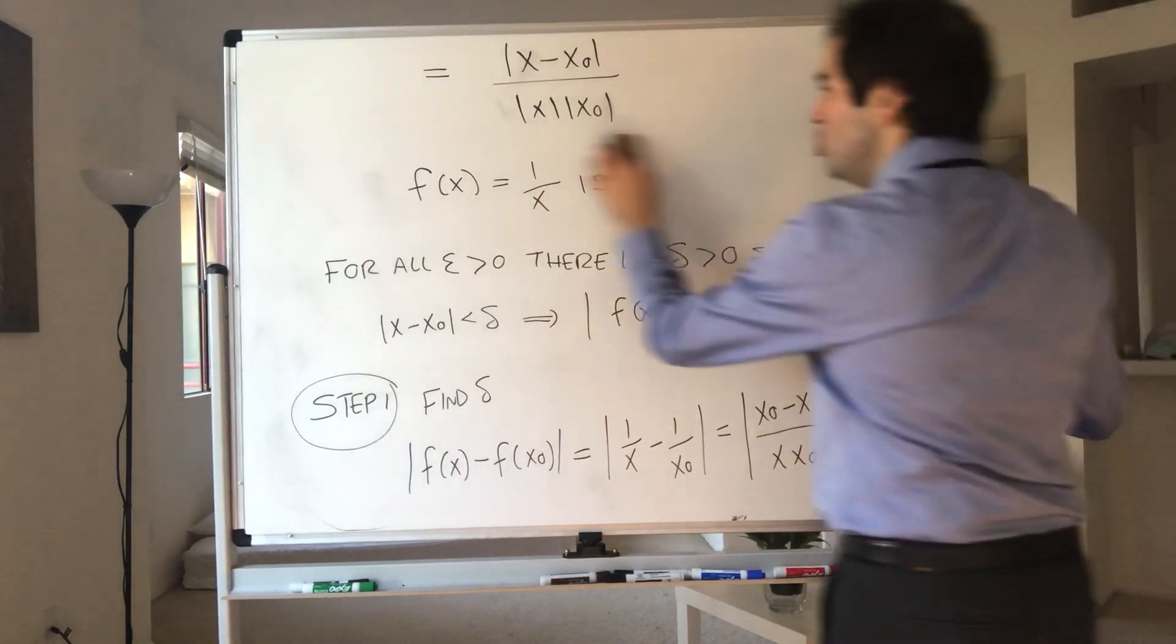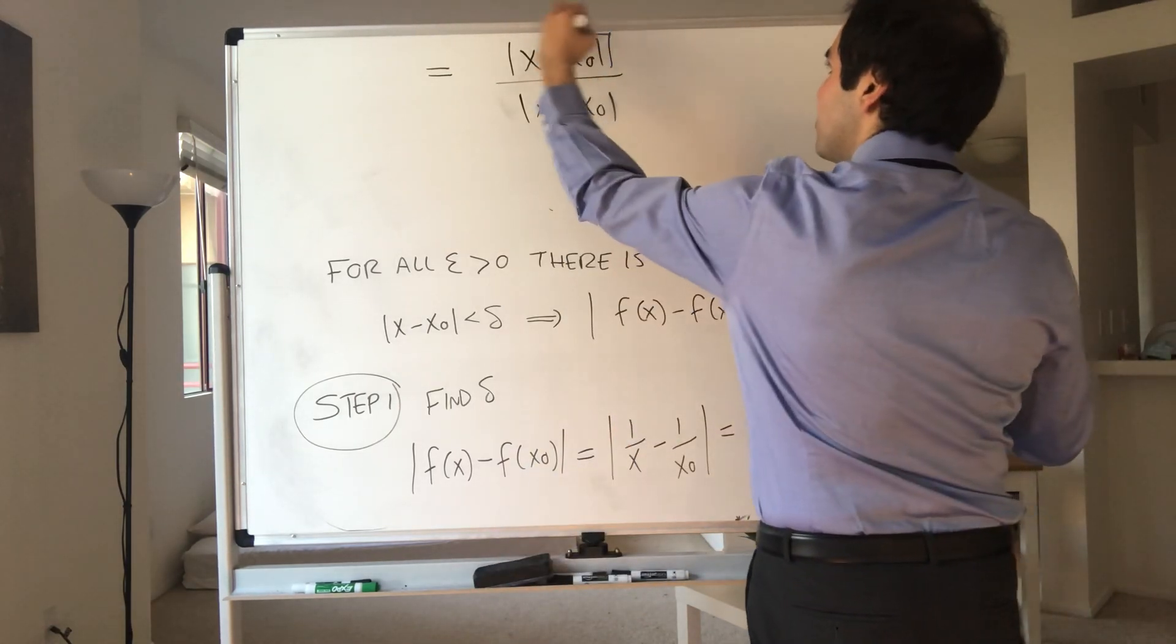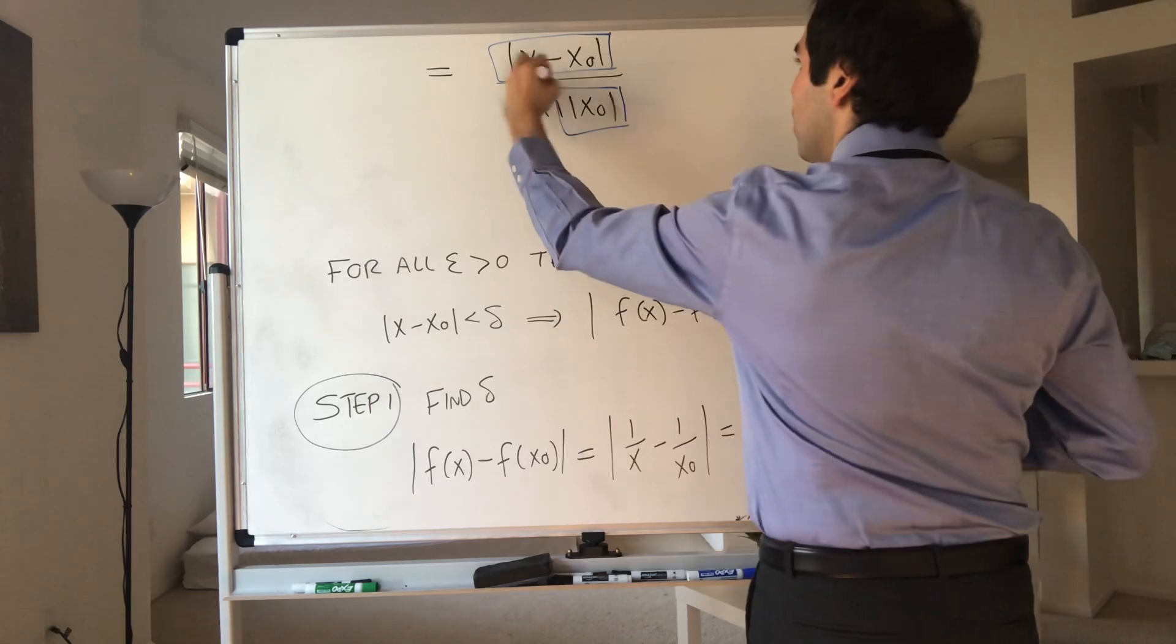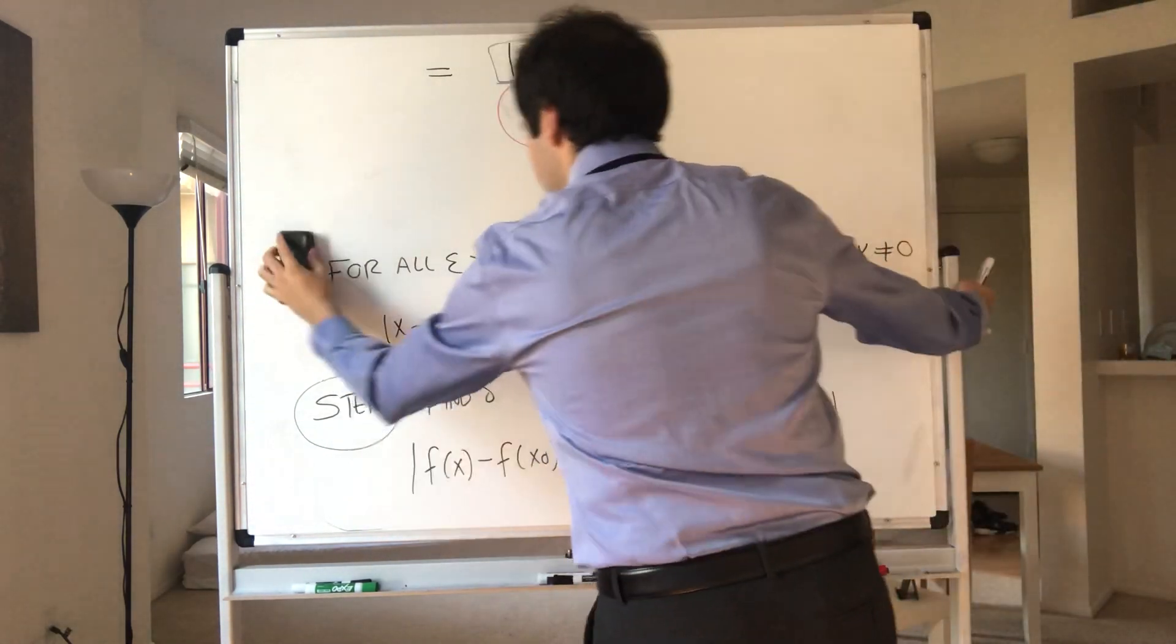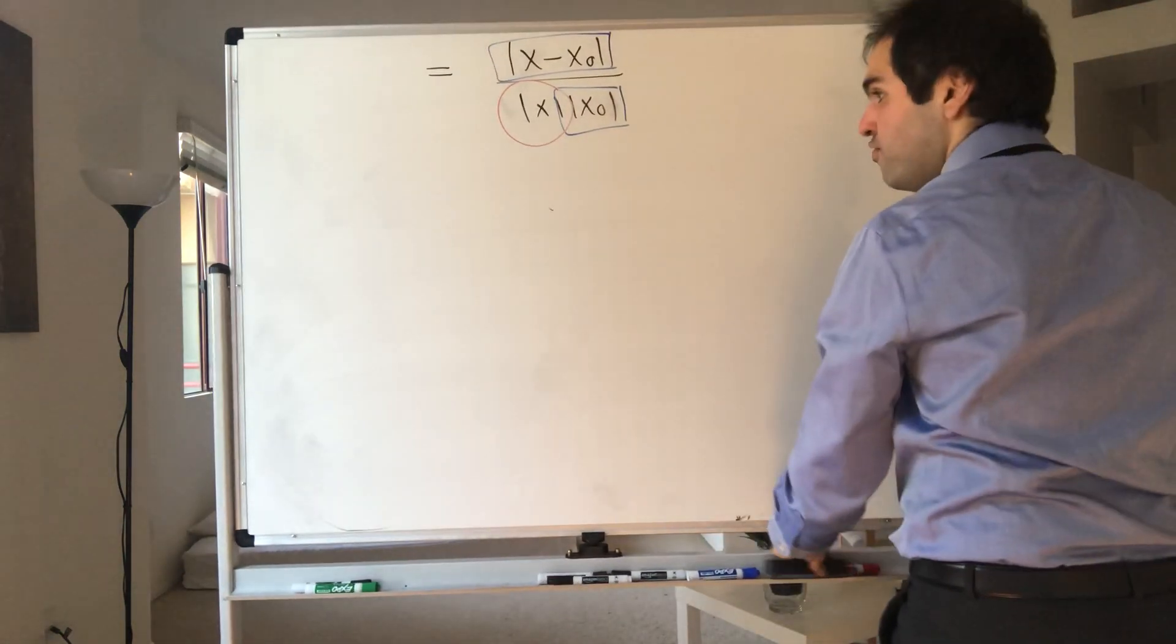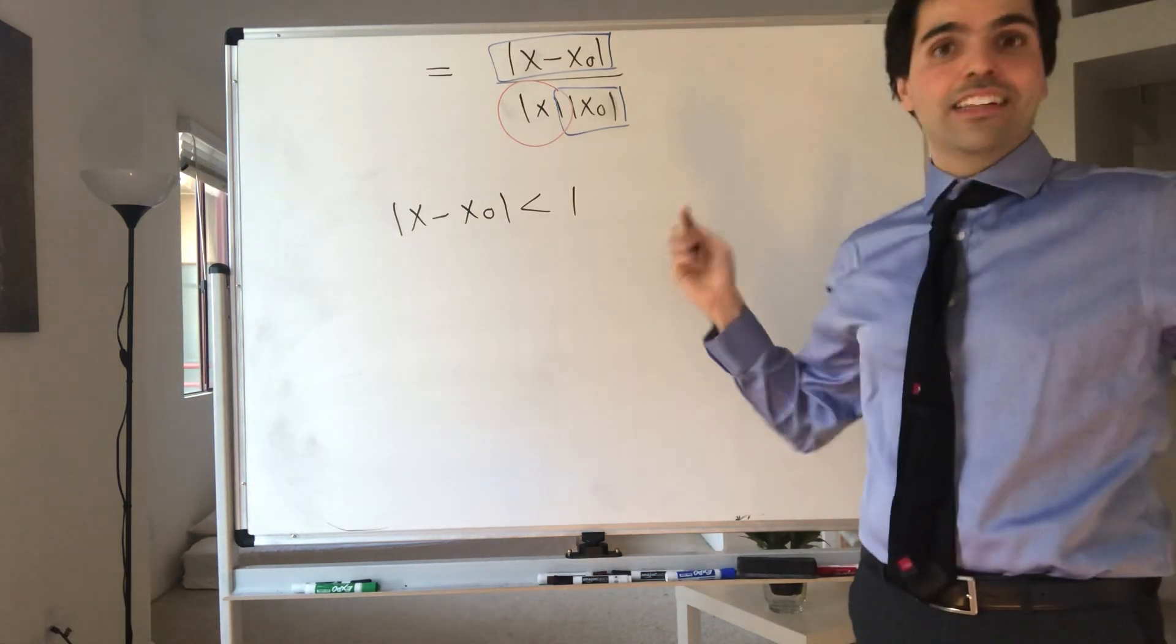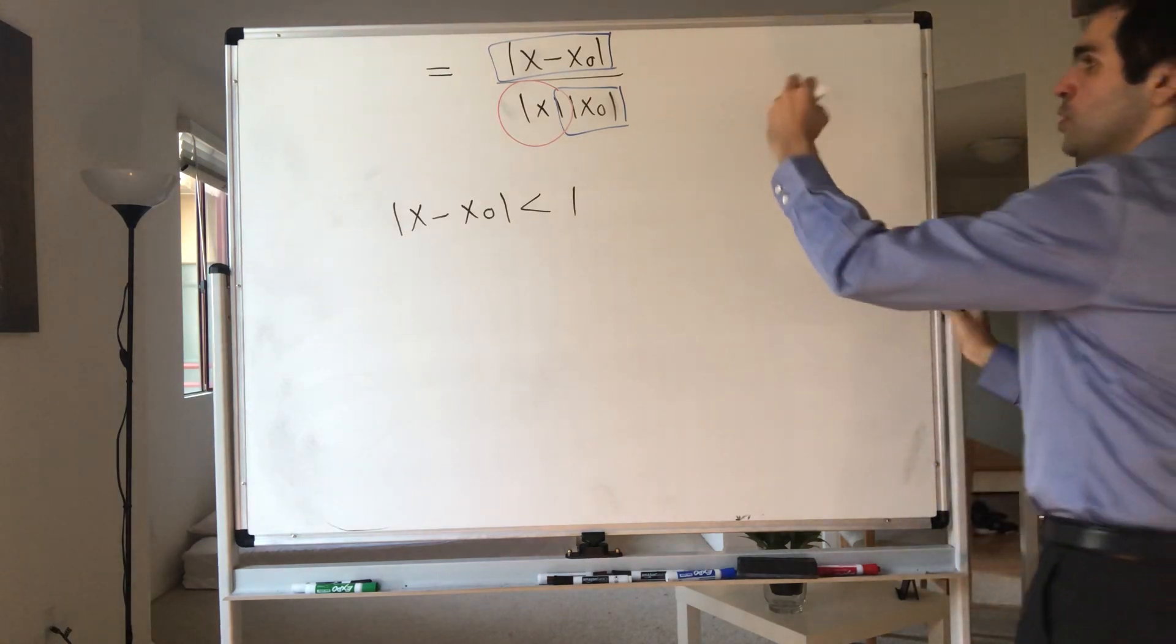Now, the numerator is good, because that's where delta comes from. That's the stuff we can control. This is also good, because it's constant. The only thing we have to control is this absolute value of x term. Now, here's a little problem.